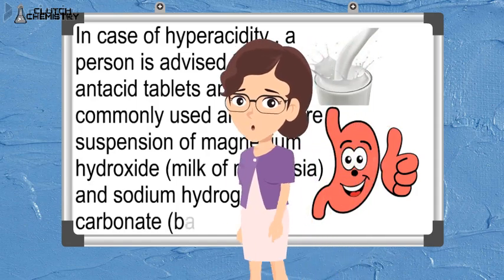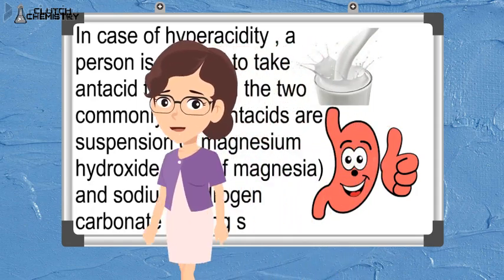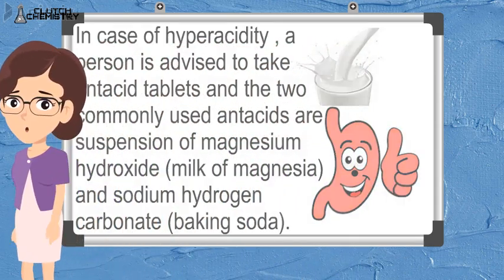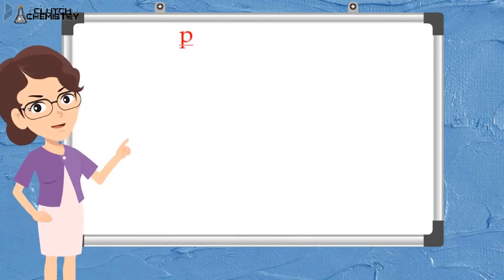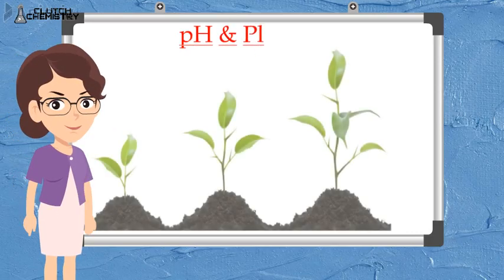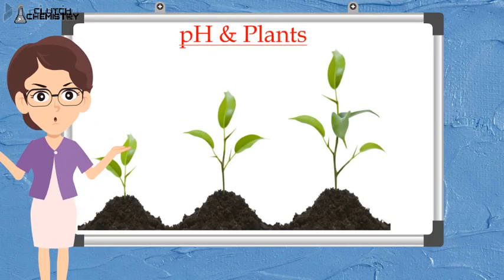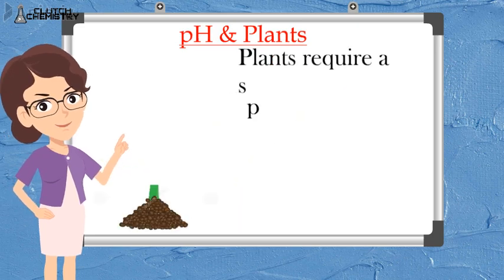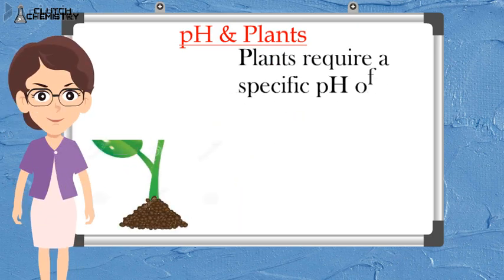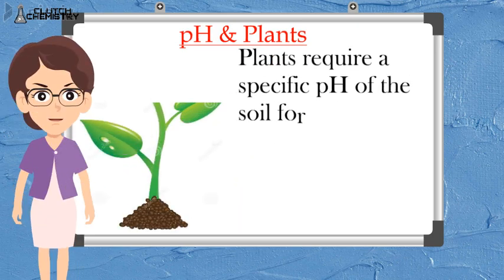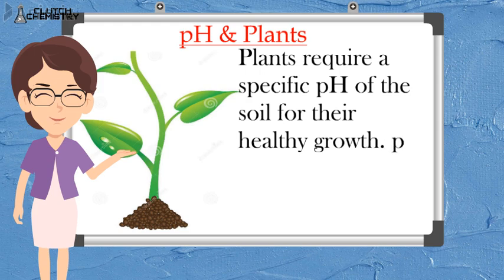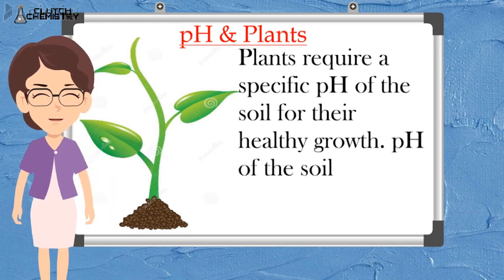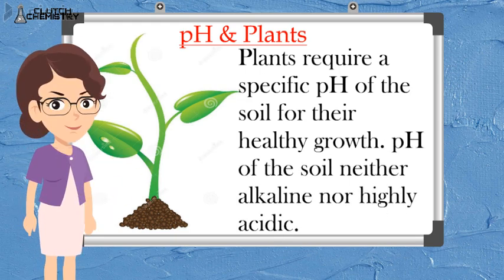And if I talk about pH and plants, for the healthy growth of plants, the soil's pH should be in a specific range — it should be neither too acidic nor too basic.